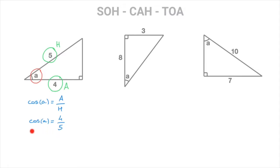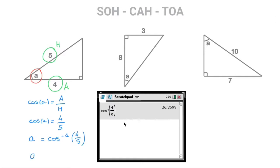At this stage we know the value of the cosine of angle A. But what about the angle A itself? For that, we'll need the inverse cosine function, which allows us to get the angle A outside of the cosine. We write that angle A is equal to the inverse cosine of 4 over 5. Using our calculator and rounding to one decimal place, we find that the angle A is equal to 36.9 degrees. And that's the final answer.